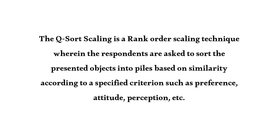The Q Sort Scale is a unique and valuable measurement tool used to capture subjective opinions and preferences. For example, given a bag of 100 magazines, you choose 10 most preferred, 20 preferred, 30 neutral, 20 disliked, and 20 least preferred — sorting them into categories.